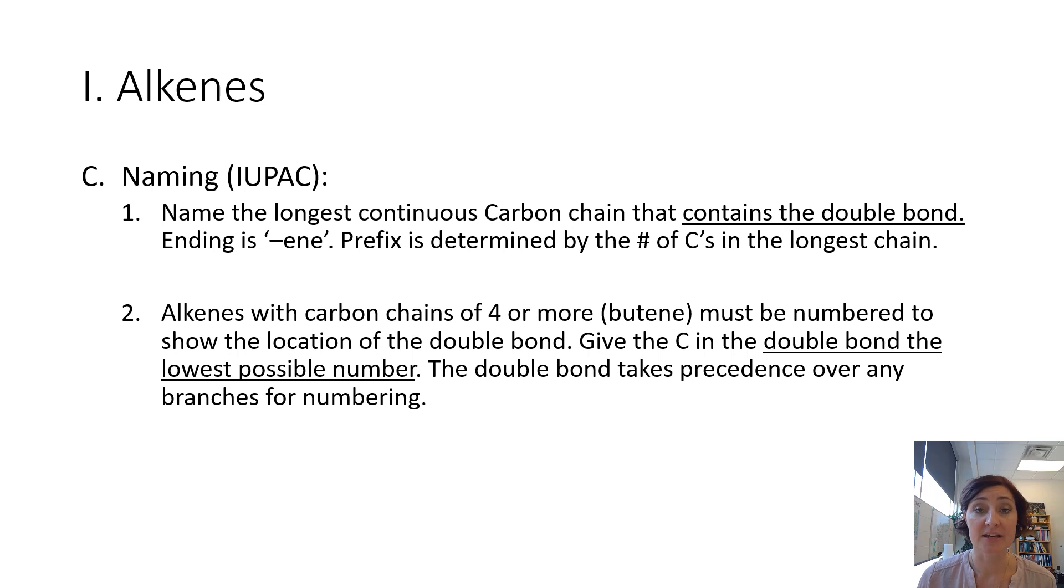If you have an alkene that is four carbons long or more, so starting with butene, you're going to have to number to show the location of the double bond. We'll do an example that shows you what I'm talking about. You have to say where the double bond is. You're going to give the carbon in the double bond the lowest possible number.